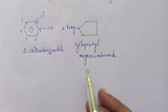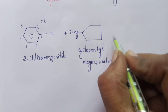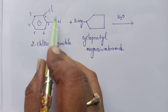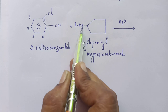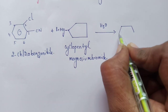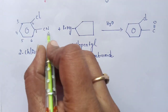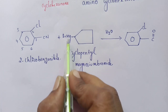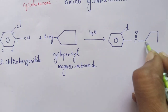To react both molecules, we first have to convert the cyanide group into a carboxylic acid by hydrolysis. In the presence of water, the cyanide group is converted into an acid with the release of ammonia. The acid then reacts with the Grignard reagent (cyclopentylmagnesium bromide), the hydroxyl is lost, and finally a ketone is formed with the cyclopentyl group attached.